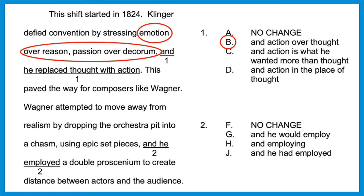In the second question: 'Wagner attempted to move away from realism by dropping the orchestra pit into a chasm, using epic set pieces, and he employed a double proscenium.' Those three verbs — dropping, using, and then 'he employed' — don't flow. It needs to say 'dropping, using, and employing.' The answer makes it: 'by dropping the orchestra pit into a chasm, using epic set pieces, and employing a double proscenium.' The verbs now match. These are all examples of parallelism, but let's look at another variation.